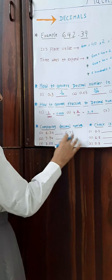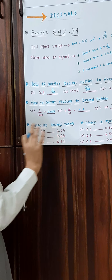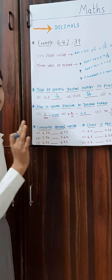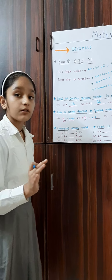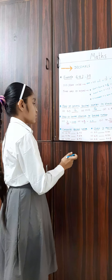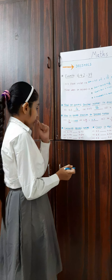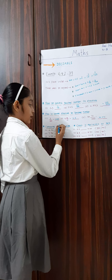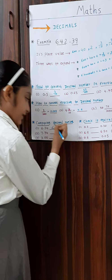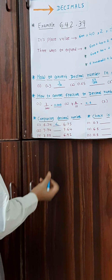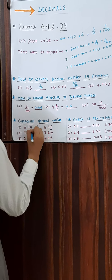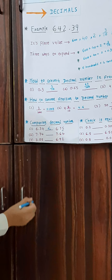Comparing 6.34 and 6.35: 6 equals 6, 3 equals 3, but 4 and 5 are not equal. So 5 is bigger than 4, meaning 6.35 is bigger. We put the greater-than sign accordingly.